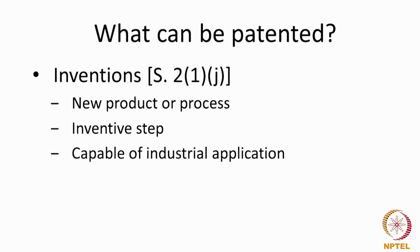Invention has three requirements: novelty, inventive step, and utility. But for something to be an invention and captured as a patent, the invention should manifest itself in the form of a product or a process. That is why a new product or a process are mentioned together. If the invention cannot be envisaged as a product or a process, then a patent cannot be granted.